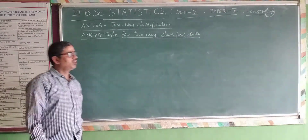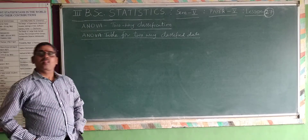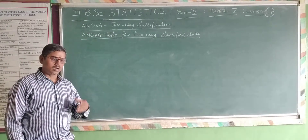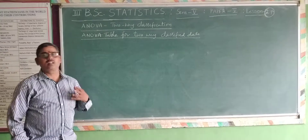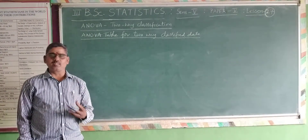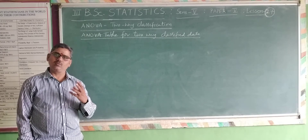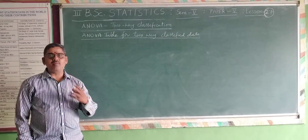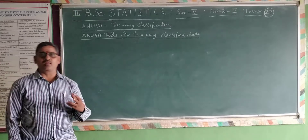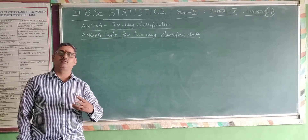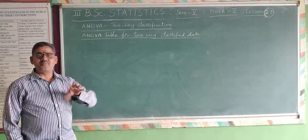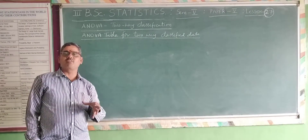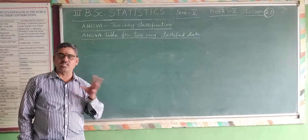Welcome back. This is Vardha. The next lesson is an ANOVA table for two-way classified data. I explained one-way classified data as well as the ANOVA table. All the contents we use can be identified from the table very simply. All the contents appear at a glance in a particular table, and just by referring to the table, we can easily get the information of the entire one-way or two-way classification.